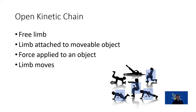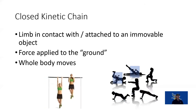Open kinetic chain is when we have a free limb applying force to a freely movable object — interacting in free space, like a bicep curl or overhead press. Closed kinetic chain is when we apply force into the ground or a fixed object and our body moves — everything moves within us in a closed chain activity, such as a squat or push-up.